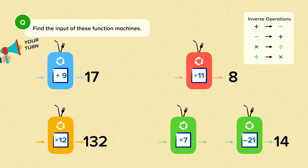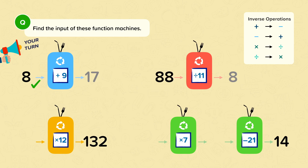Your turn. Find the input of these function machines. Pause your video now. Question 1: something plus 9 is 17. The 17 goes backwards and we need to take away 9 from it. We find the input must be 8. Question 2: 8 goes in backwards and does the inverse of dividing by 11, which is multiplying by 11. So we multiply 8 by 11 and we get the input of this function machine, which is 88.